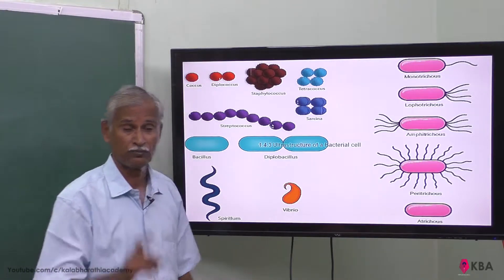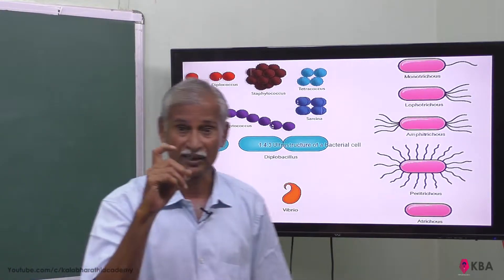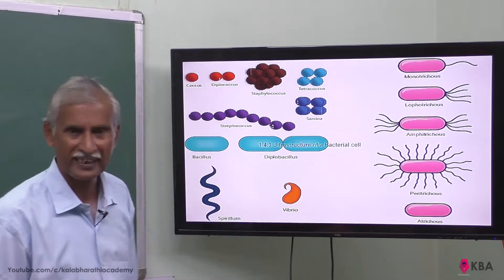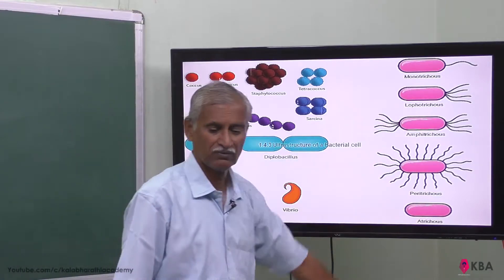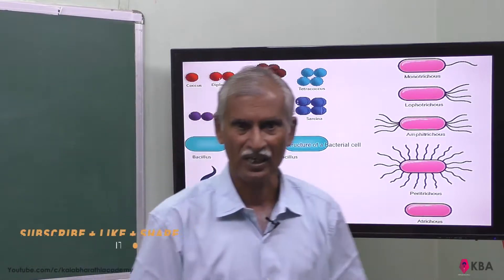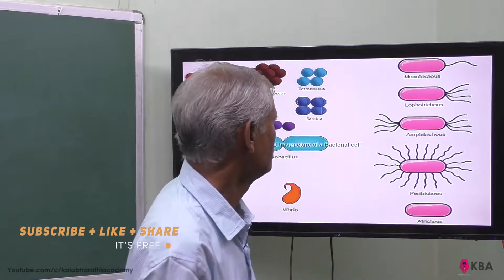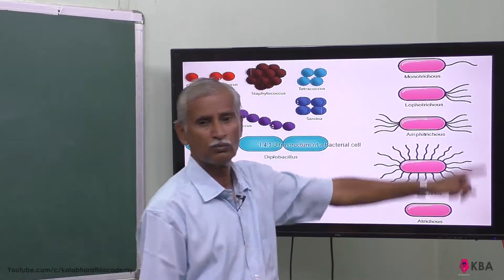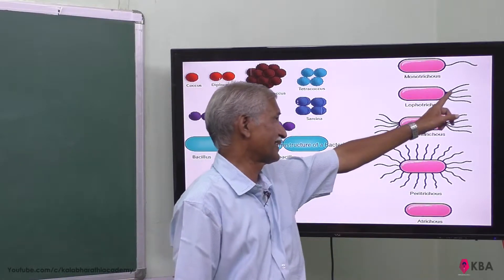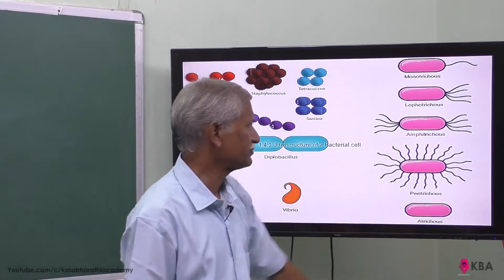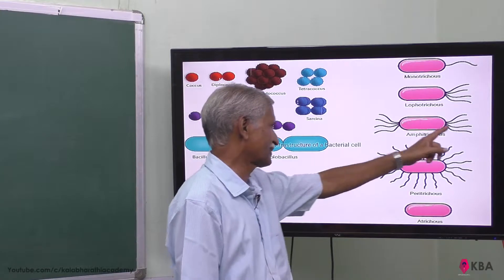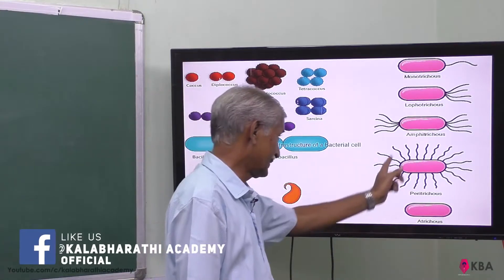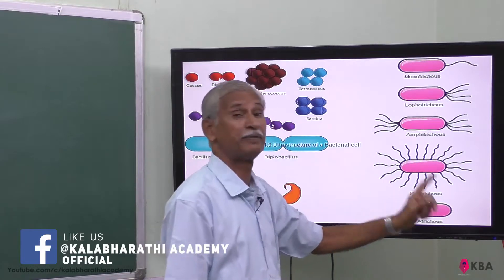Another classification includes vibrio — comma-shaped bacteria. Vibrio cholerae is an example of vibrio-type bacteria. Bacteria can also be classified by their flagella: monotrichous (single flagellum), lophothrichous (one side), amphitrichous (both sides), and peritrichous (all around).